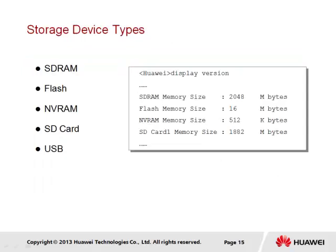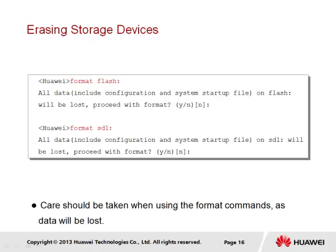Configuration files may be stored in a variety of locations which varies from product to product. The S5700 switch, for example, by default will store configuration files within the flash memory, whilst the AR2200 series router will default to the SD card storage location or SD1 when saving configuration files. It is also possible to attach external storage in the form of USB in order to save and load configuration files. When erasing a single configuration file the reset saved configuration command is used. If the entire storage location of a device is to be erased, the format command is used along with the storage location to be formatted. It is generally recommended that these commands not be used unless absolutely necessary, since erased files in a formatted storage location cannot be recovered.